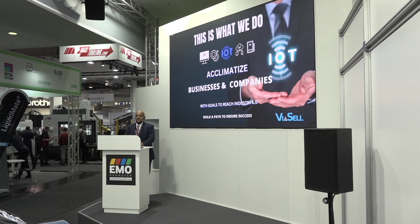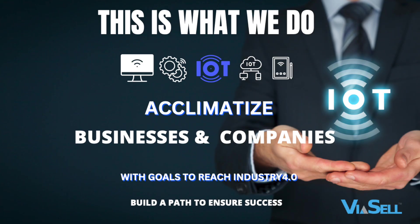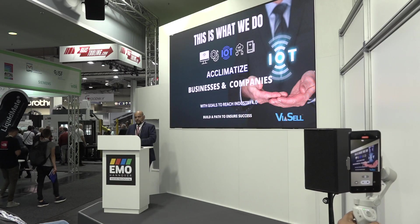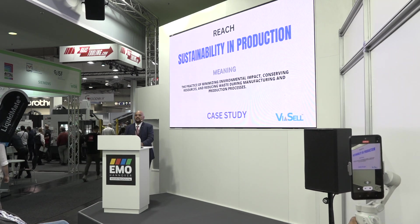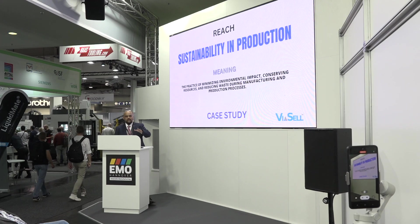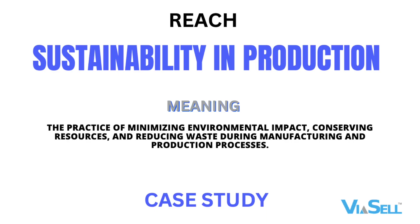This is what we do — help businesses and companies acclimatize with goals to reach Industry 4.0, build a path ensuring success, and reach sustainability in production. Now, I need to explain the meaning of sustainability in production, because everyone will relate it to growing plants, saving water, saving the earth — but in this context it is the practice of minimizing environmental impact, conserving resources, and reducing waste during manufacturing and production processes.